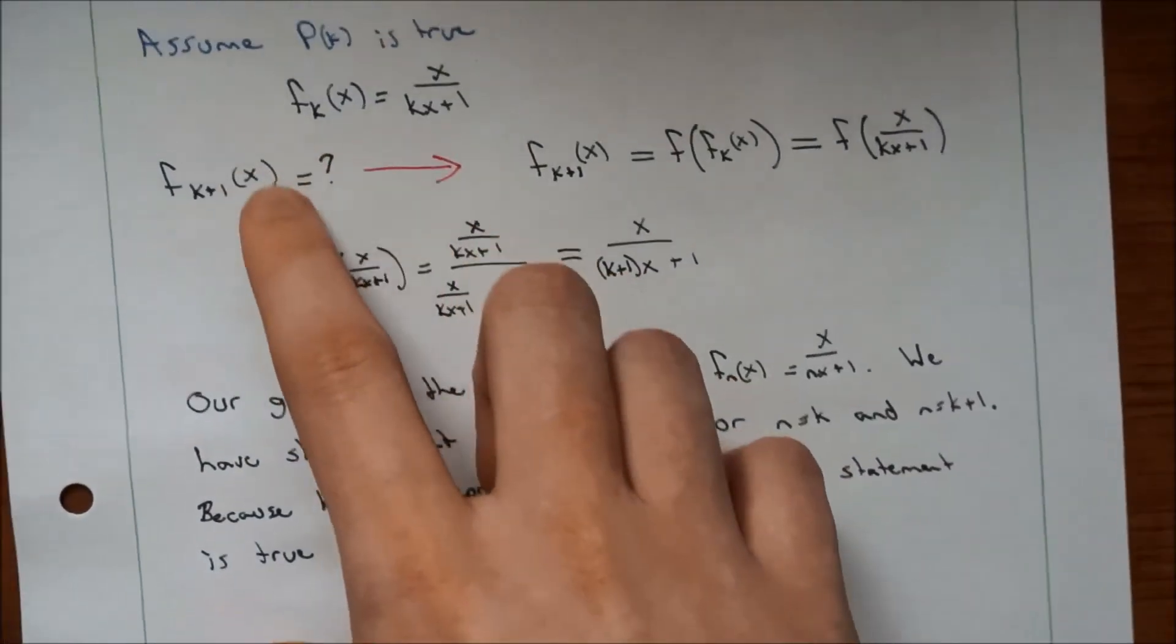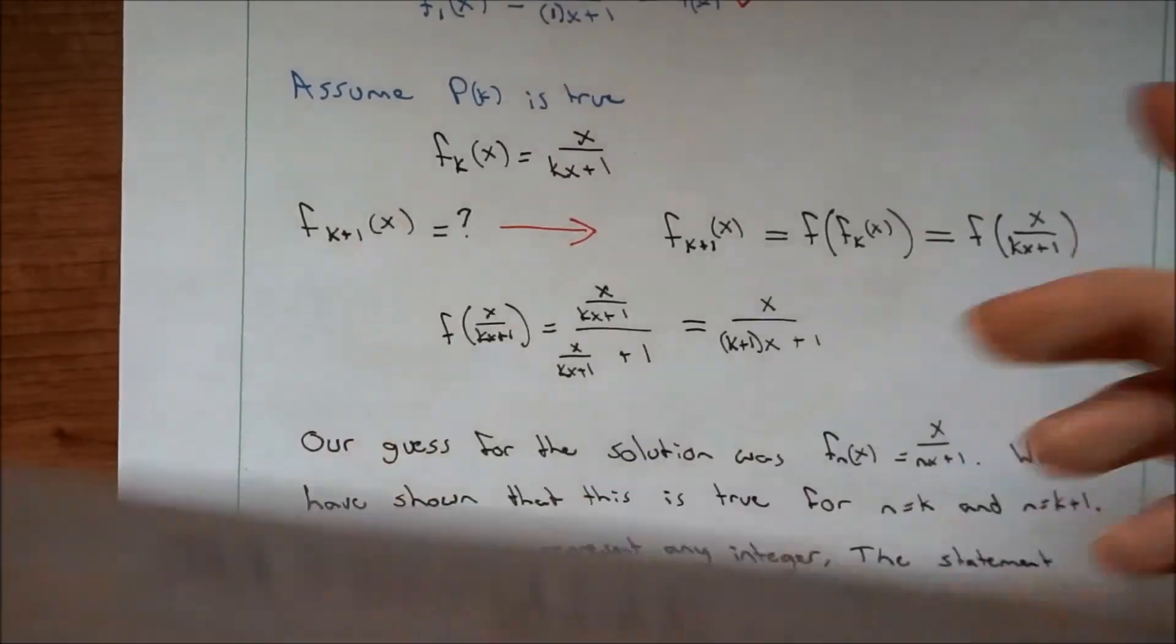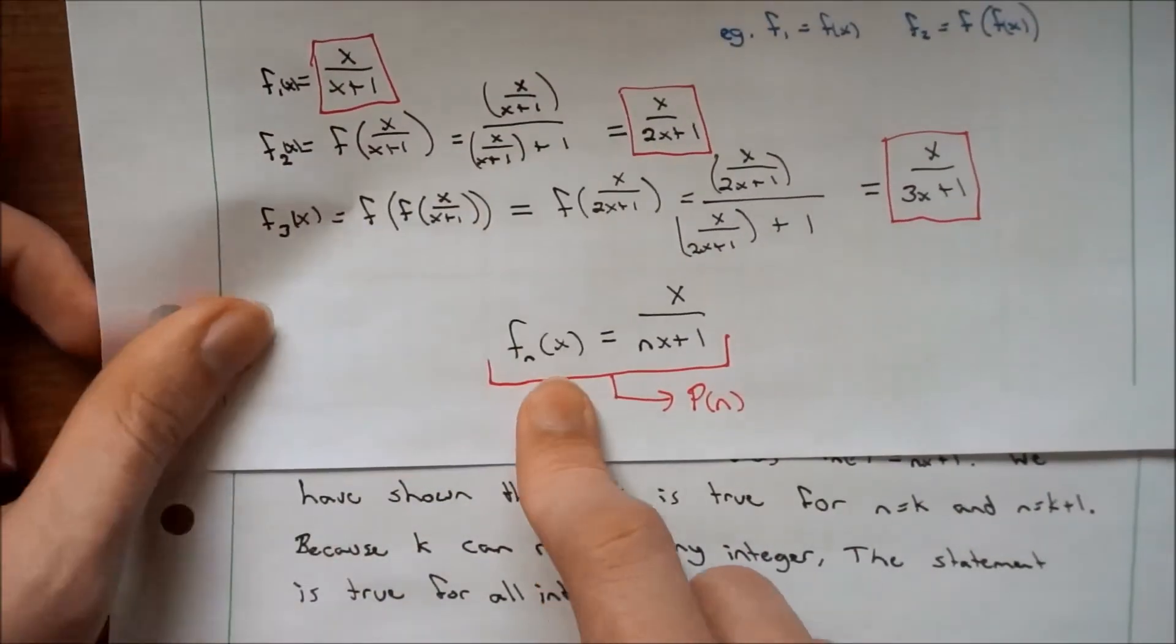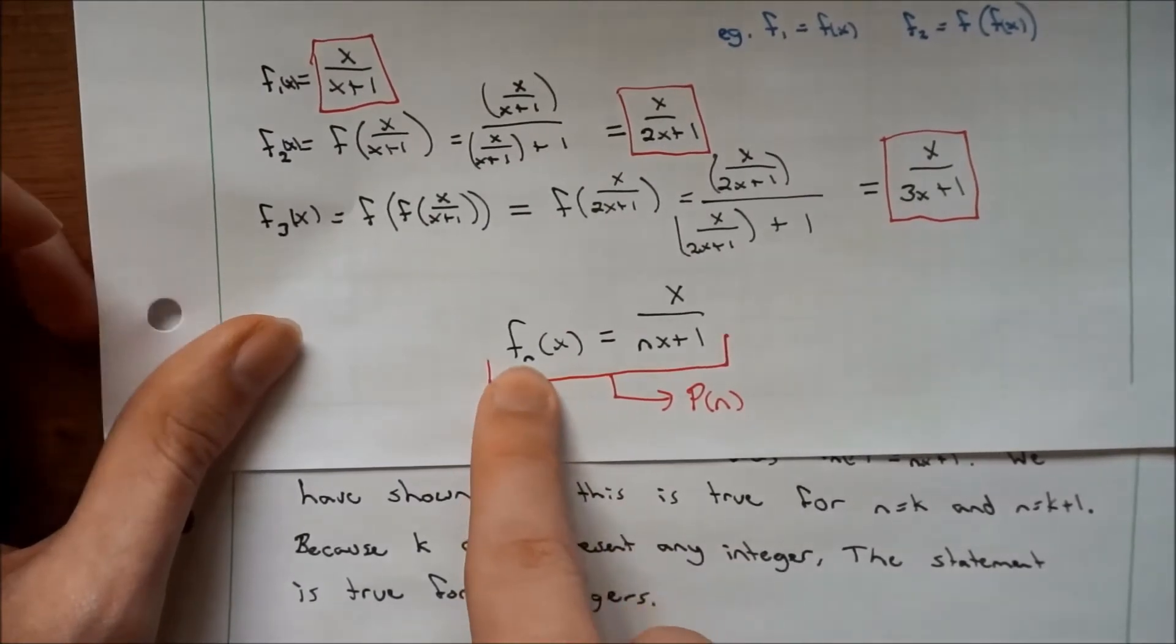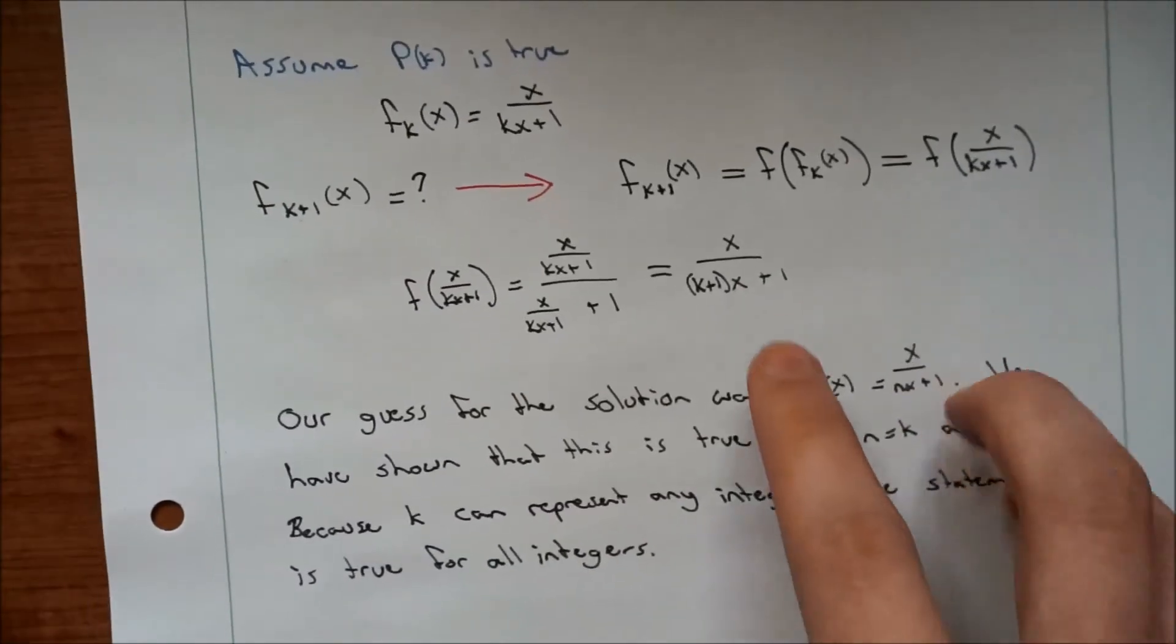which follows our form. Because we were looking for f_{k+1}, and based on our formula here, if n is k+1, you should have (k+1) times x plus 1, which is what we found.